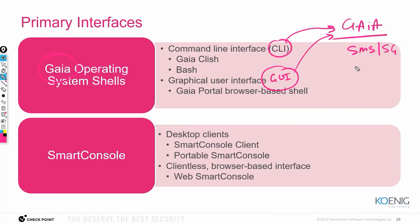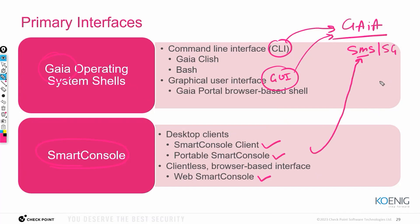If you want to access the management server, you use SmartConsole. SmartConsole nowadays comes in many flavors — it could be a dedicated client, a portable SmartConsole, or a web SmartConsole. From the SmartConsole you connect to your management server, and from the management server you can direct the gateway on what traffic to control. These are the basic concepts you should have from CCSA.